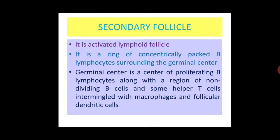The germinal center is a region of proliferating B lymphocytes along with non-proliferating B cells, helper T cells interspersed with macrophages and follicular dendritic cells. Most antigen-activated B cells divide and differentiate into antibody-producing plasma cells in lymphoid follicles, but very few B lymphocytes enter into germinal centers.